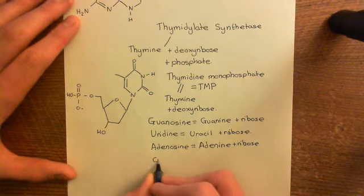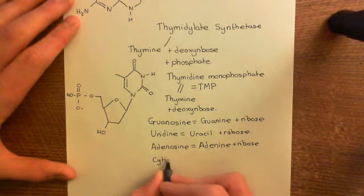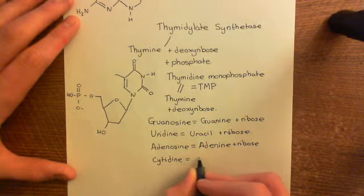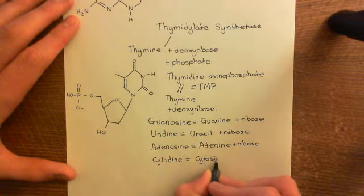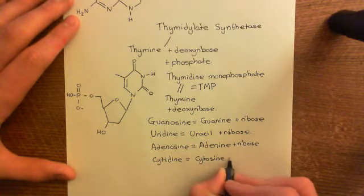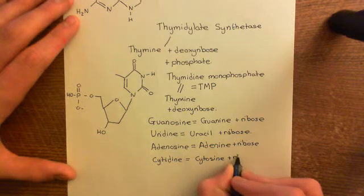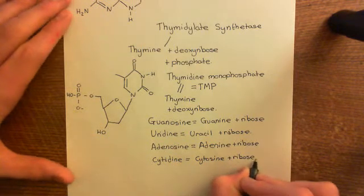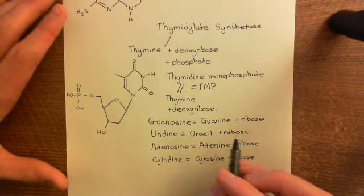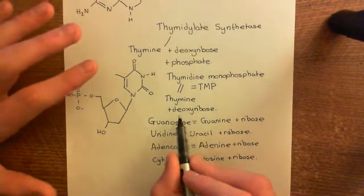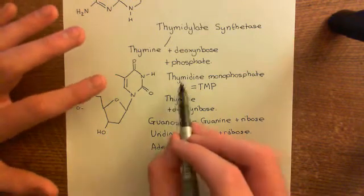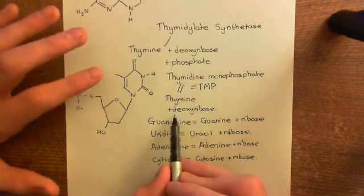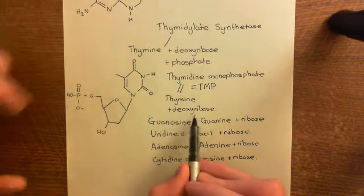And finally, cytidine — cytidine is the organic base cytosine plus ribose. So thymidine is the odd one out. You would think that thymidine was thymine plus ribose, but no — thymidine means thymine plus deoxyribose.